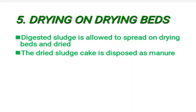The fifth method is drying on drying beds. Here, digested sludge is allowed to spread on drying beds and dried using sunlight. The dried sludge cake is then disposed as manure.